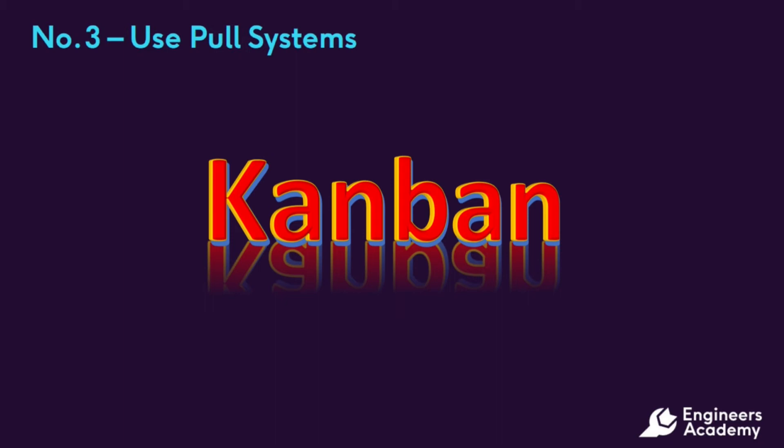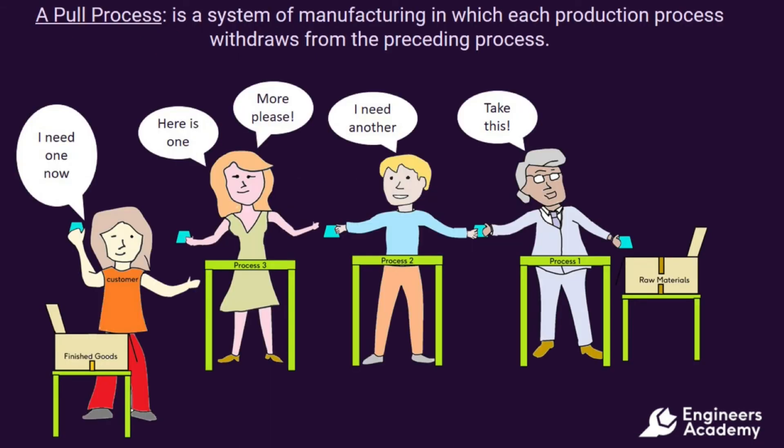As you might expect, computers are now often used for this purpose, but more traditional systems are still employed in some operations. A pull process is a system of manufacturing in which each production process withdraws from the preceding process. In the example here, the customer makes the request, drawing parts from process 3, which triggers demand from process 2 down to process 1.